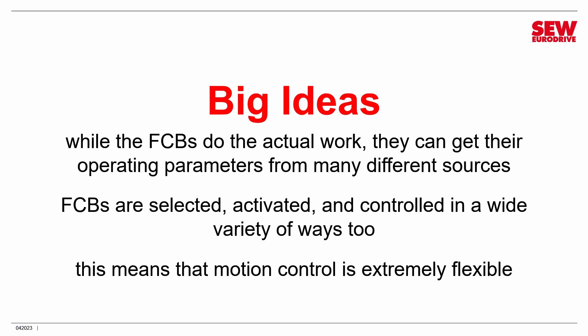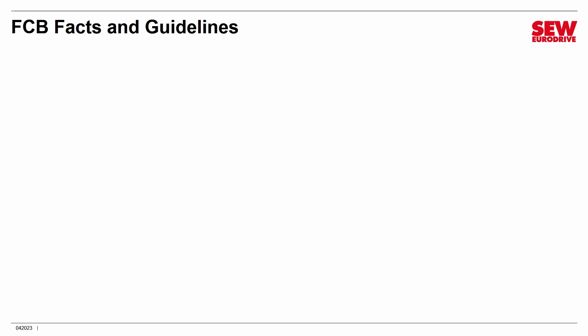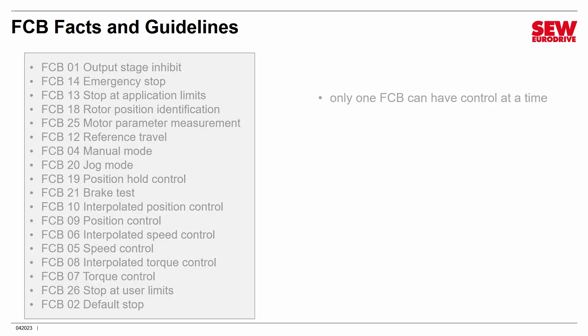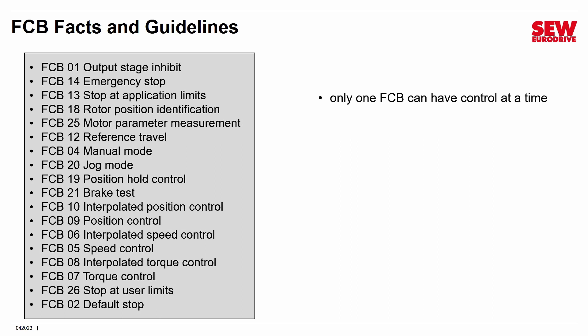FCBs can be selected, activated, and controlled in a variety of ways, and that means motion control is extremely flexible. FCBs can be selected, activated, and controlled by I/O, parameters, or the fieldbus — there are a lot of possibilities, and we're going to explore several of them throughout this class. One key fact: only one FCB can have control at a time. You clearly cannot have FCBs competing for control — that would be a dangerous situation — so from your list of FCBs, only one can be in control at a time.